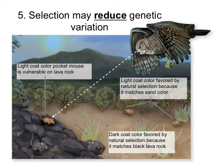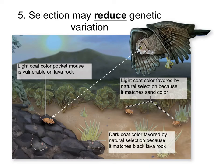Finally, the last agent of evolutionary change — not surprisingly — is selection. Selection is favoring certain alleles over others. Here is the example of mice in the lava rocks: if you're living in the lava rocks, it's better to be a dark mouse so you can hide and camouflage. If you're brown, you will stand out and get predated. On the other hand, if you're in the sand, having the light color camouflages you better and protects you from predation, while being dark in the sand makes you more likely to be eaten. So we see how selection is changing the allele frequency, and how that depends on the particular environment.